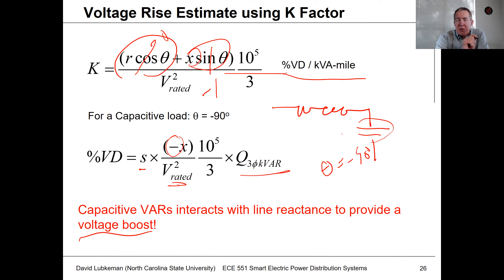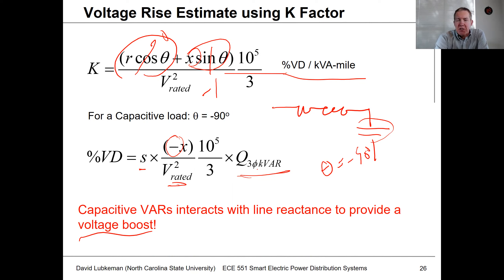What you have to watch out for is overcompensating, because you can actually make the voltage rise as high as you want to, but then you get all these different undesirable effects when you do so.